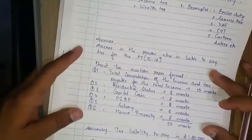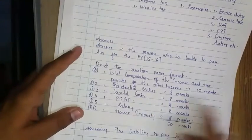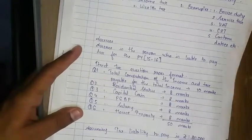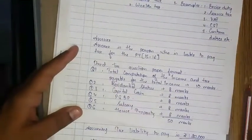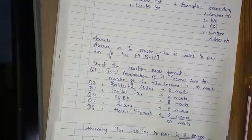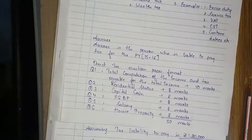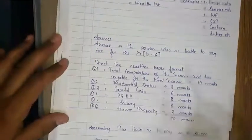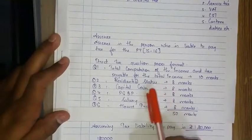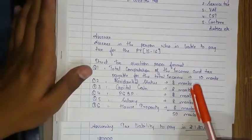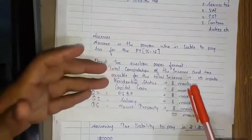Let me again discuss the total income computation. Computation of total income means - see, you and me are a person. The person makes an income. Income means like from the residence, from the capital gain, business profession.